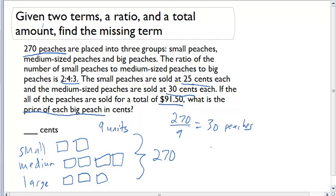So I'm going to write this over here on the right. For small, we know that we sold 60. For medium, we know that we sold 120. And for big, we know that we sold 90.